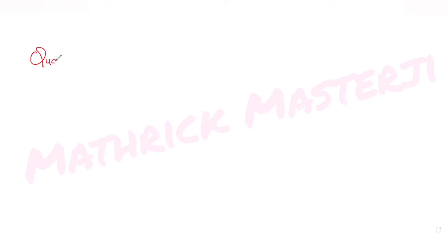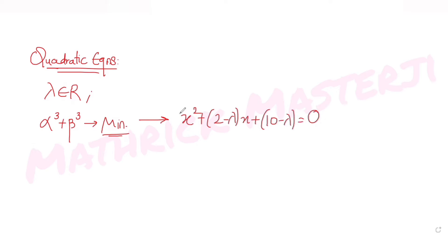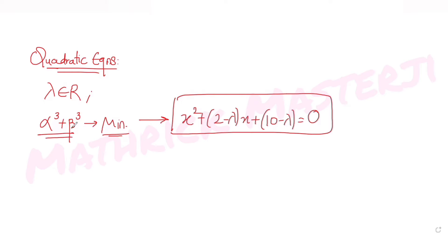Hi guys, I hope you are all doing well. Today's question is from the topic of quadratic equations. The question tells us that if lambda belongs to R (real numbers), and we have been given a condition that says the sum of the cubes of the roots of the equation x² + (2 - λ)x + (10 - λ) = 0 is minimum.